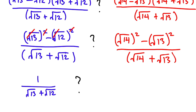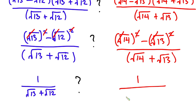Then we do the same thing on the other side. The square and square root cancel, so we have 14 minus 13, which is 1, all divided by square root of 14 plus square root of 13.